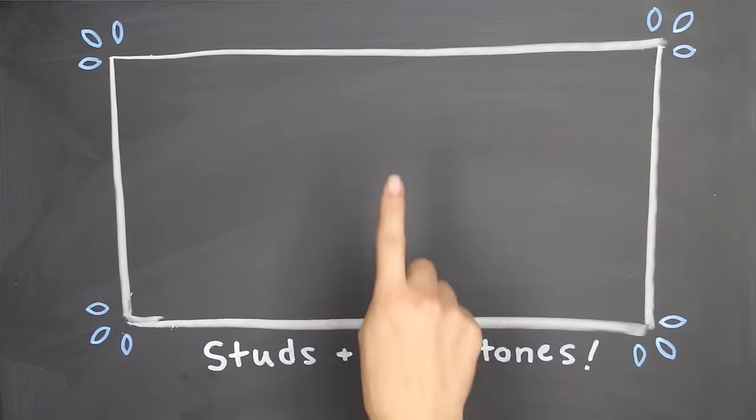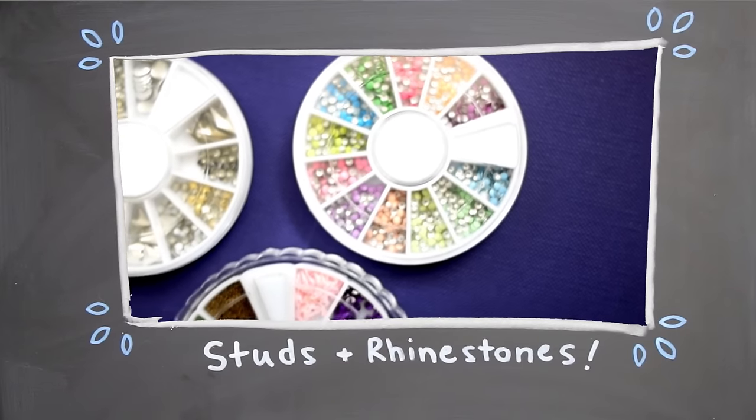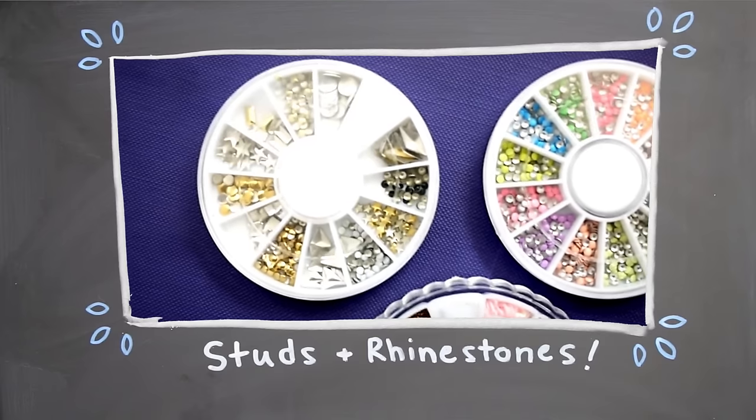First off, let's talk about studs and rhinestones. Normally I buy them online from Amazon or the Born Pretty store. They do sell them at Sally's, but they're friggin expensive, so I'd rather get them online because it's a lot cheaper.